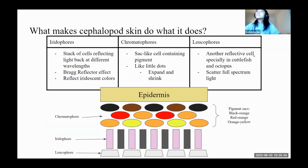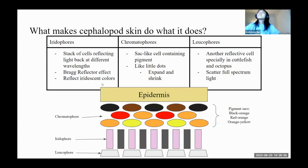Underneath cephalopod skin, they have three different organs: chromatophores, iridophores, and leukophores. Chromatophores are responsible for the main color-changing aspect. Iridophores and leukophores are pretty similar — they both reflect light — but iridophores reflect iridescent colors, while leukophores are able to scatter full-spectrum light.